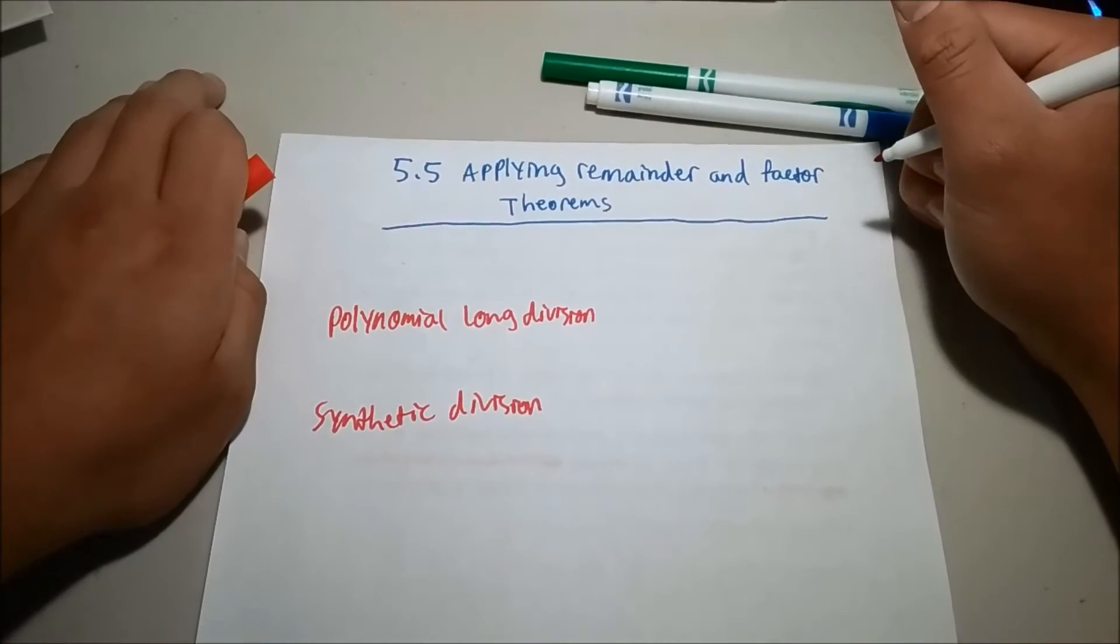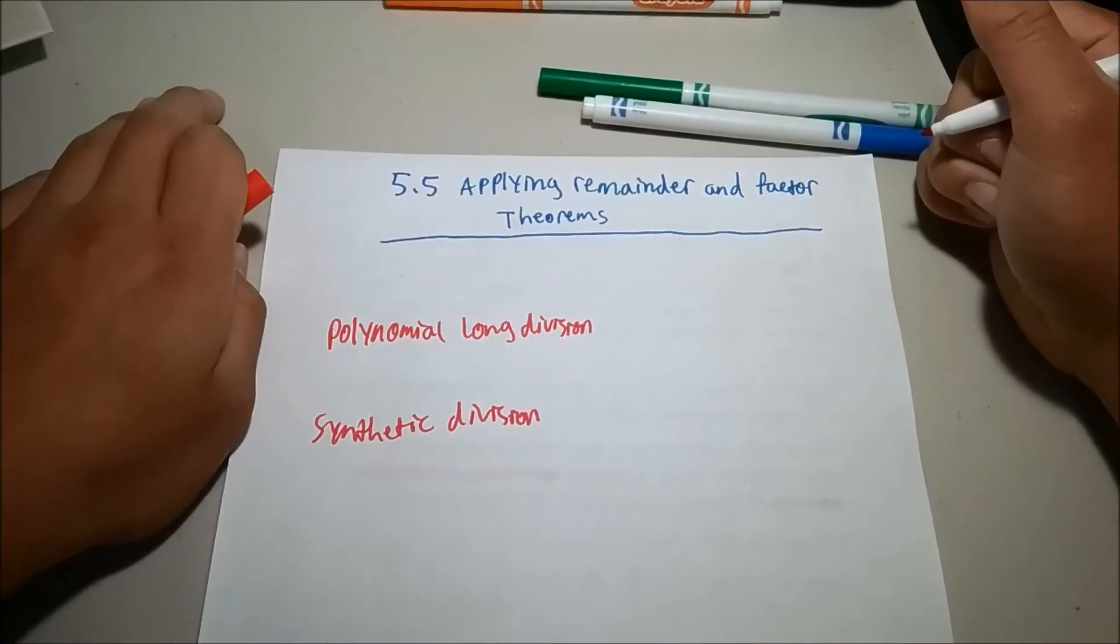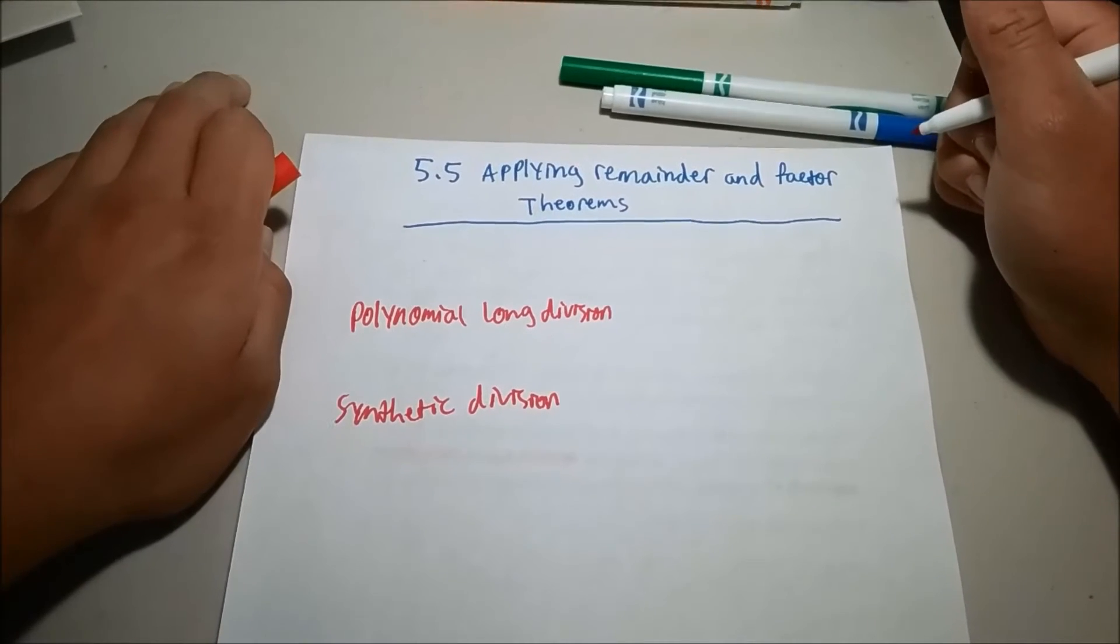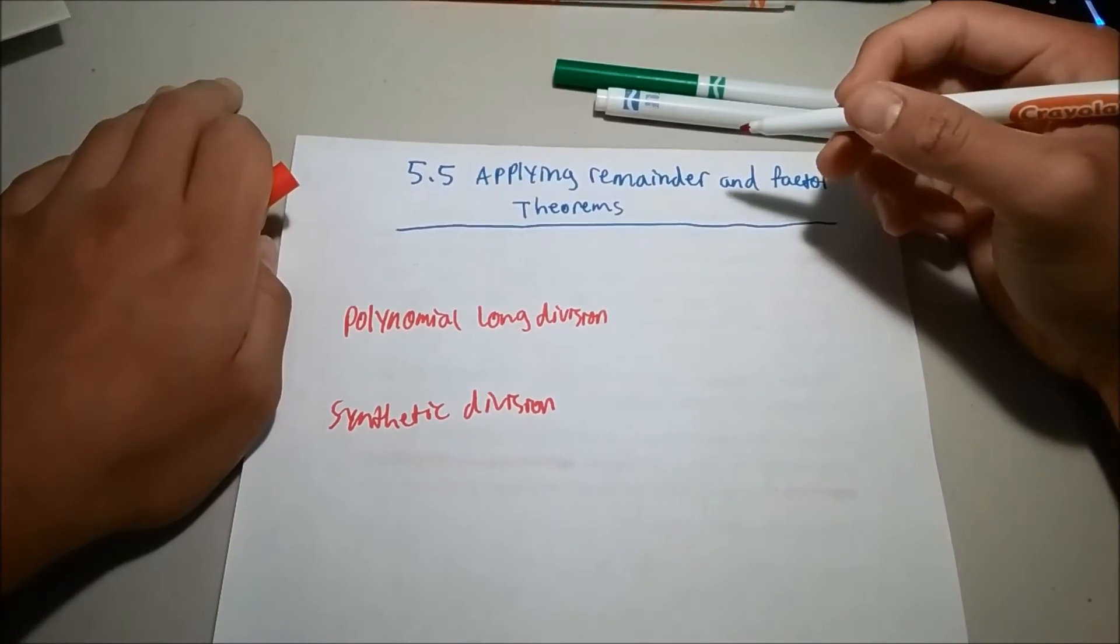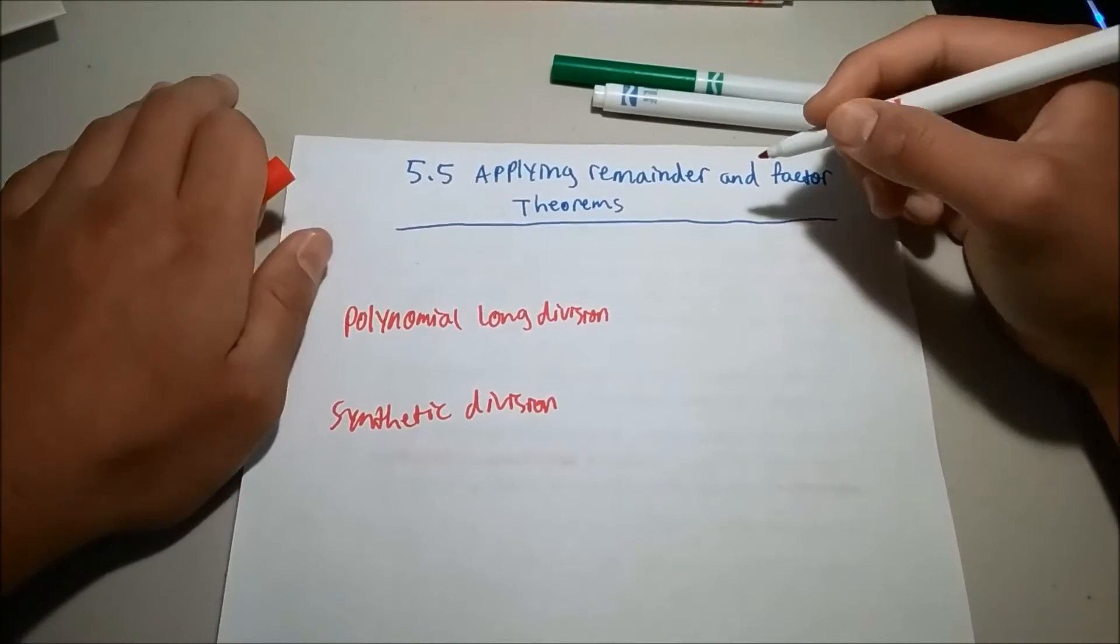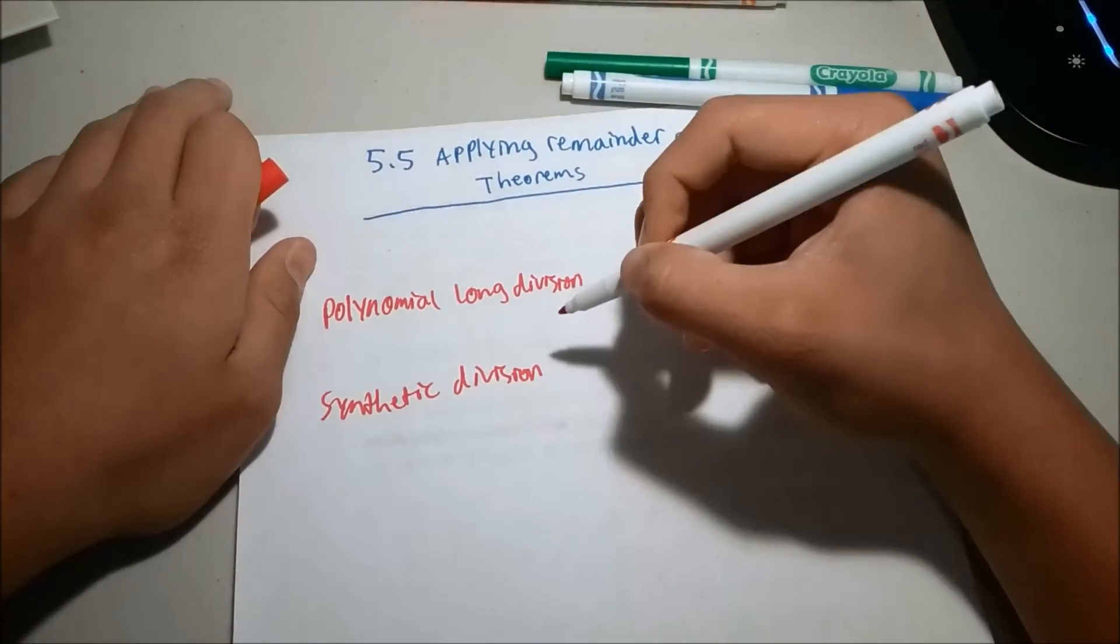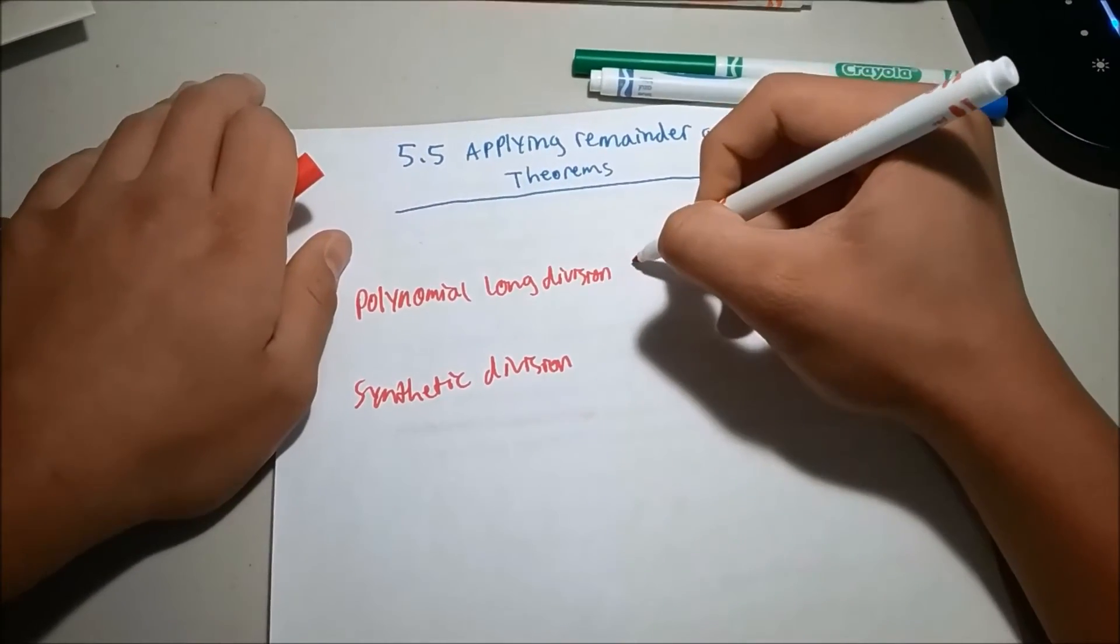Polynomial long division is a long and tedious process where synthetic division is a quicker and simpler way of dividing polynomials. Synthetic division is also sometimes called synthetic substitution. However, there is a reason why there are two methods of polynomial division.